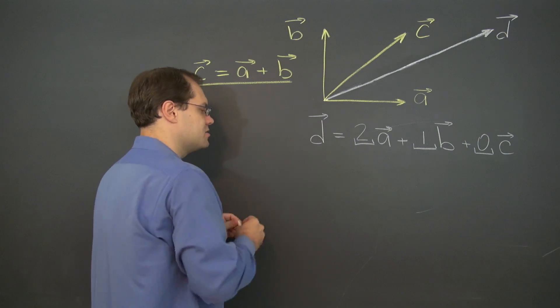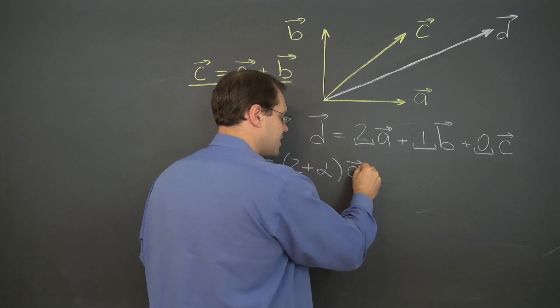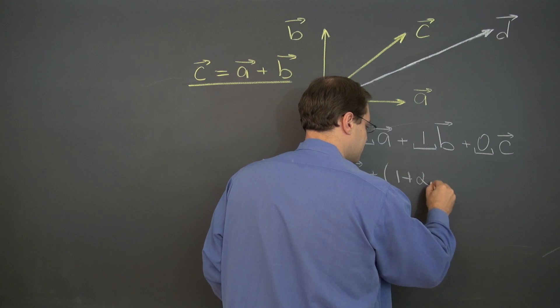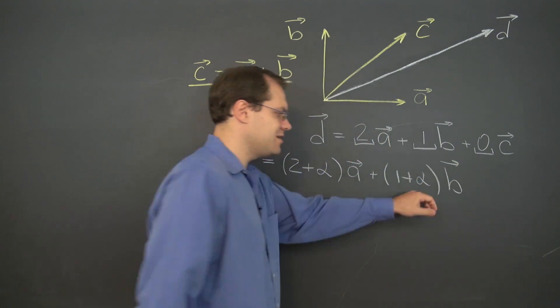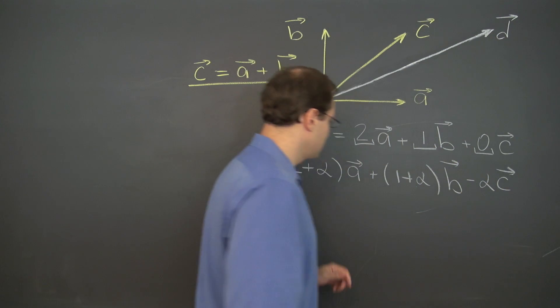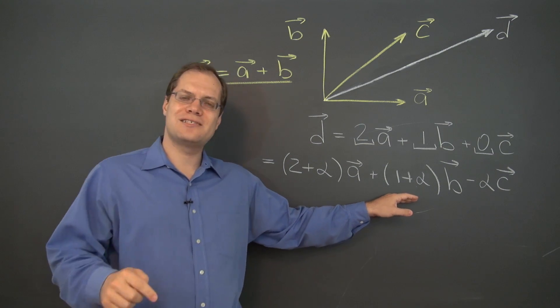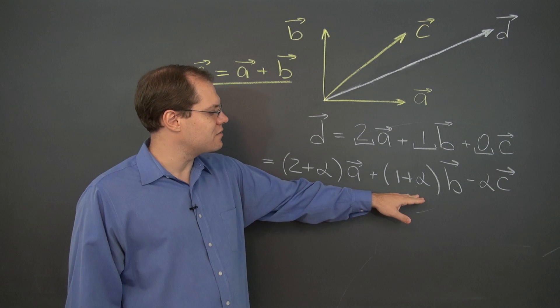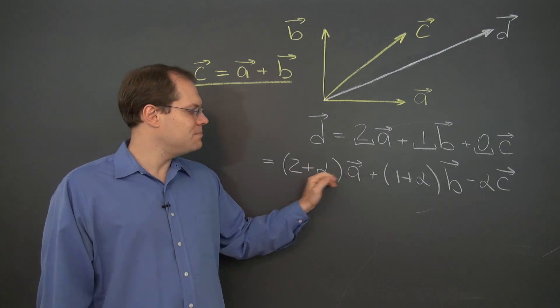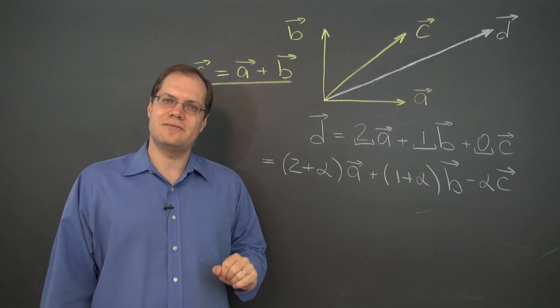We can take 2 plus alpha a, that's throwing an extra alpha of a into this expression, plus 1 plus alpha b, I just threw in an alpha of b, minus alpha c, will also equal d. So there you go. That actually satisfies the goal we set out for ourselves for this video. This expression captures the infinitely many combinations of a, b, and c that yield d. And the key to it is, of course, the fact that c can be expressed as a linear combination of a and b.